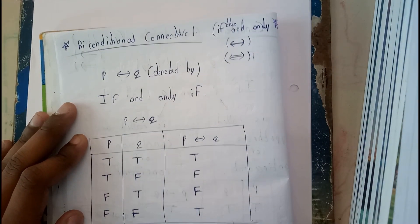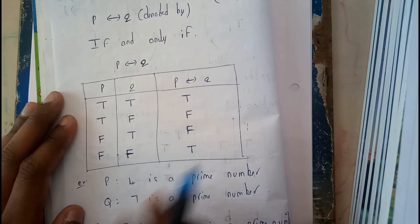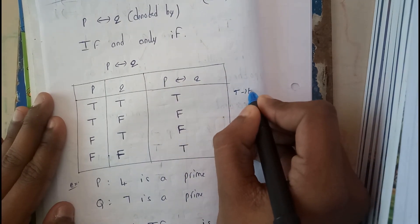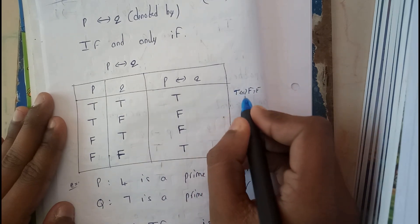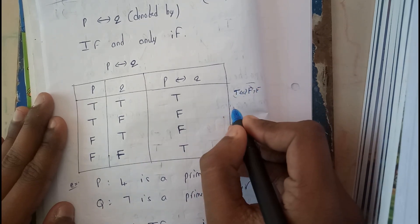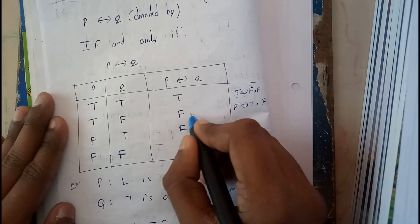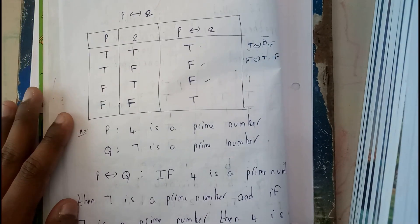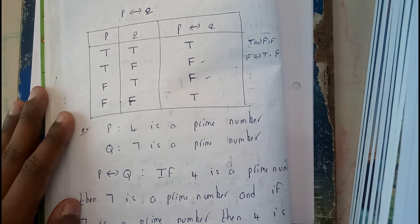When you go through the truth table, in the previous conditional connective, true implies false equals false. Here, since this is dual direction, even the reciprocal — false double implies true — is also equals to false. Those are the two false cases, and the rest of the cases are true.